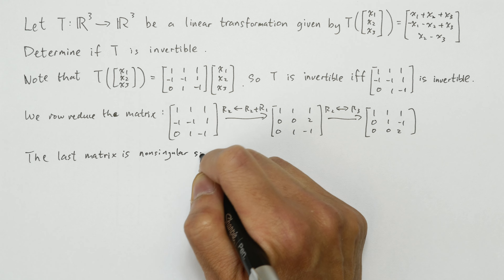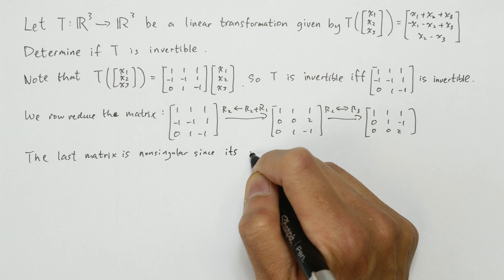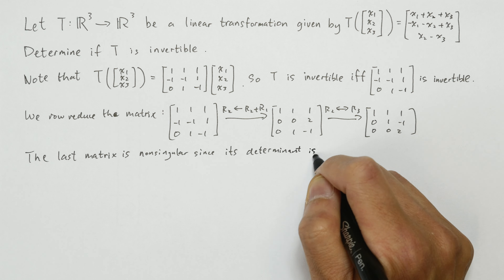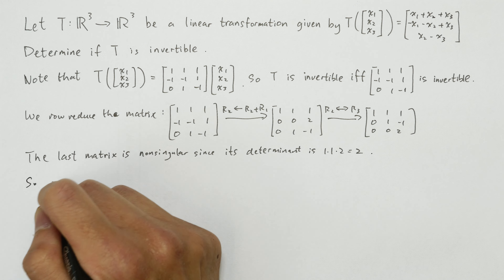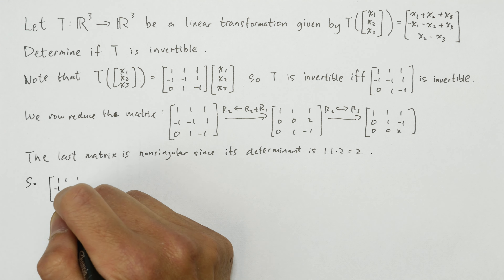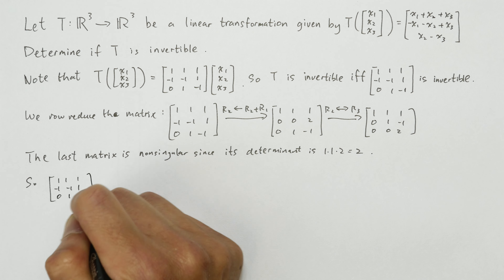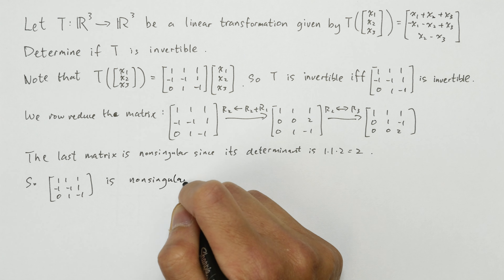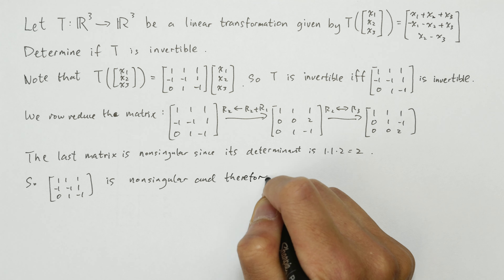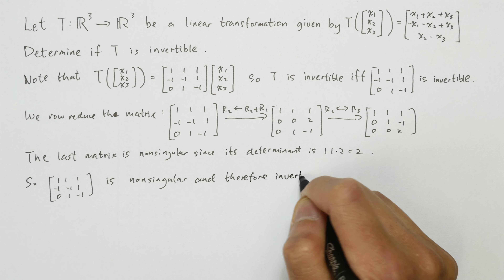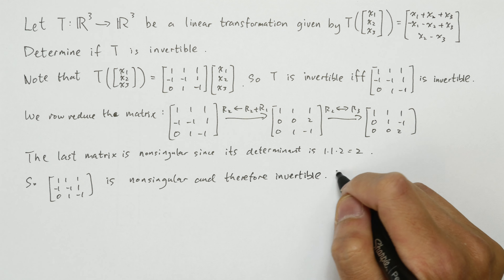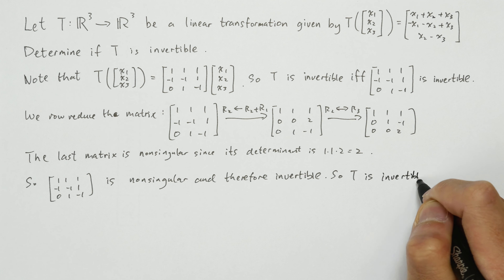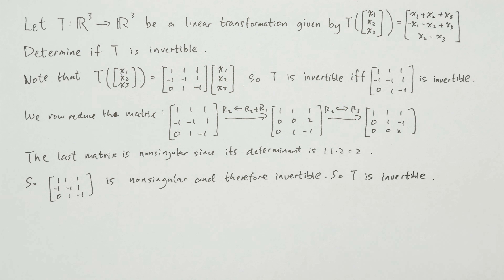The last matrix here is non-singular because its determinant is 2. Therefore, the matrix is also non-singular and therefore invertible. So the linear transformation T is invertible.